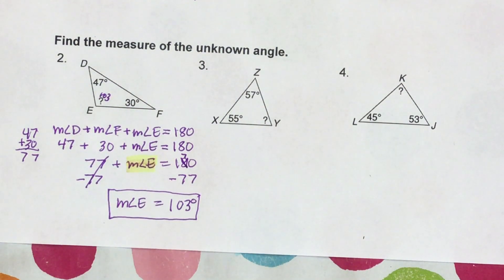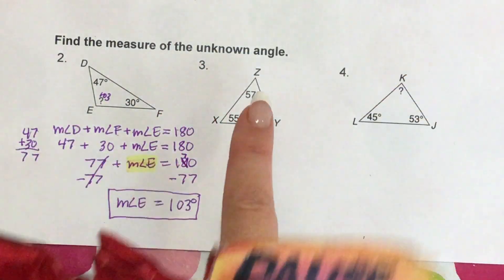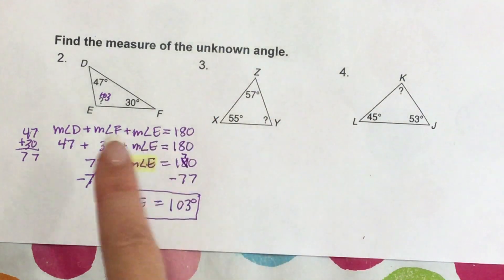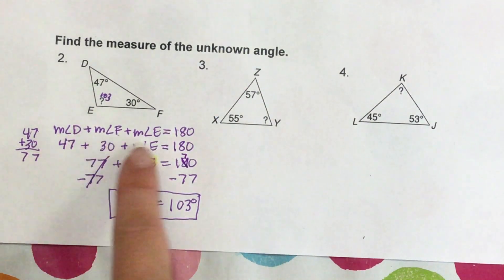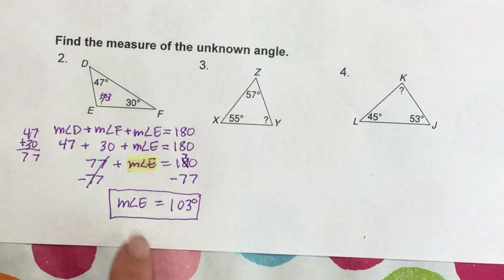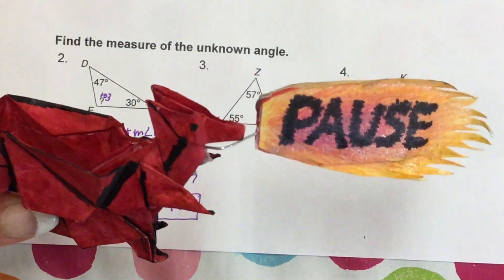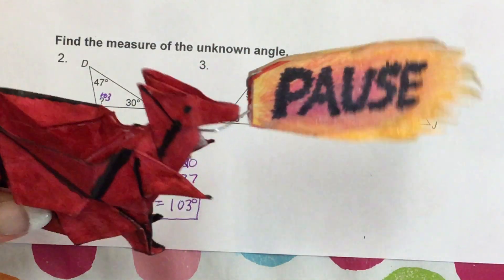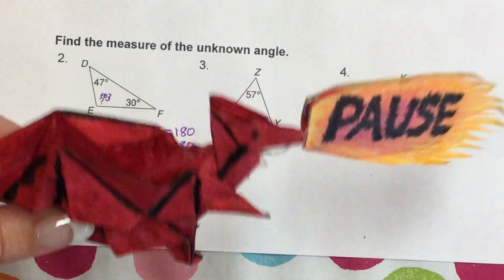Now it is your turn. I want you to go ahead and pause your device and work on problems 3 and 4. Make sure you do it exactly how I did it — write your equation with symbols, substitute, show all your algebra. Go ahead and pause, work on 3 and 4. When you get done, press play and we'll talk about your results.